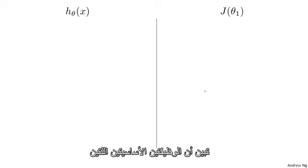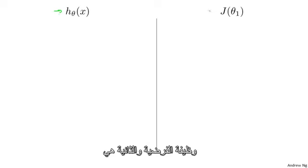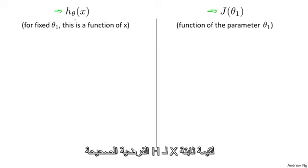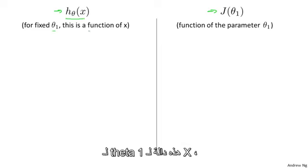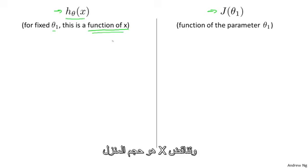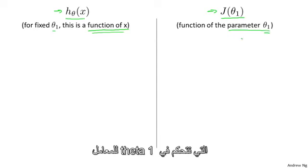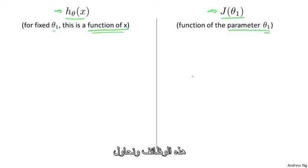Using the simplified definition, let's understand the cost function better. There are two key functions we want to understand. The first is the hypothesis function, and the second is the cost function. The hypothesis h of x, for a fixed value of theta one, is a function of x — the size of the house. In contrast, the cost function J is a function of the parameter theta one, which controls the slope of your straight line. Let's plot these functions and try to understand them both better.